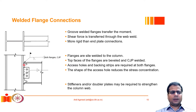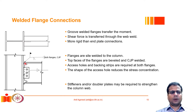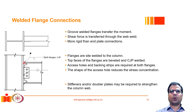Such welds are typically complete joint penetration (CJP) welds. CJP is critical because it provides the required level of ductility, which is missing in a partial joint penetration (PJP) weld. When the flange is pulled apart, a PJP weld with no other component resisting opening of the root would perform very poorly. Therefore, complete joint penetration is very critical in such situations.